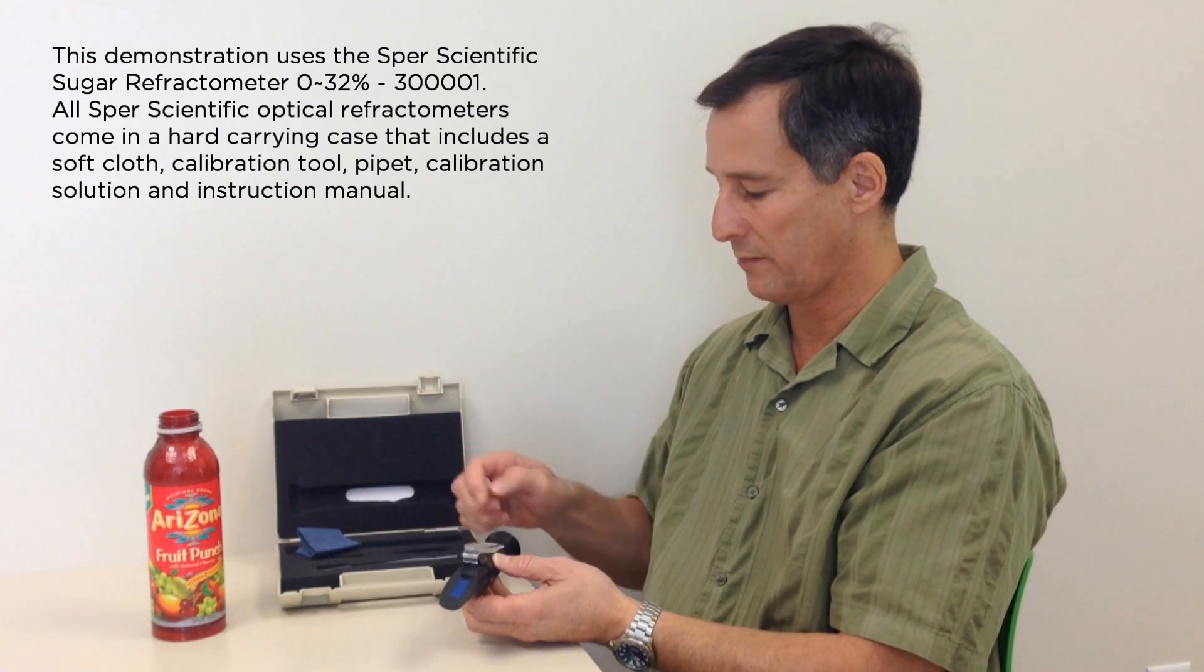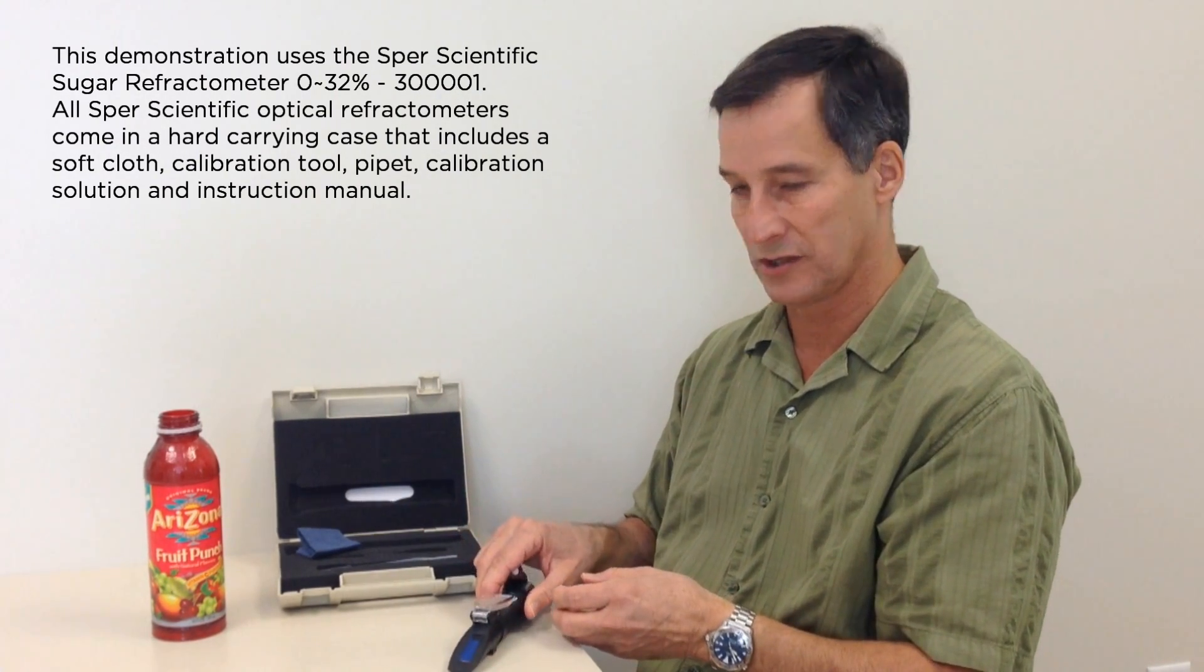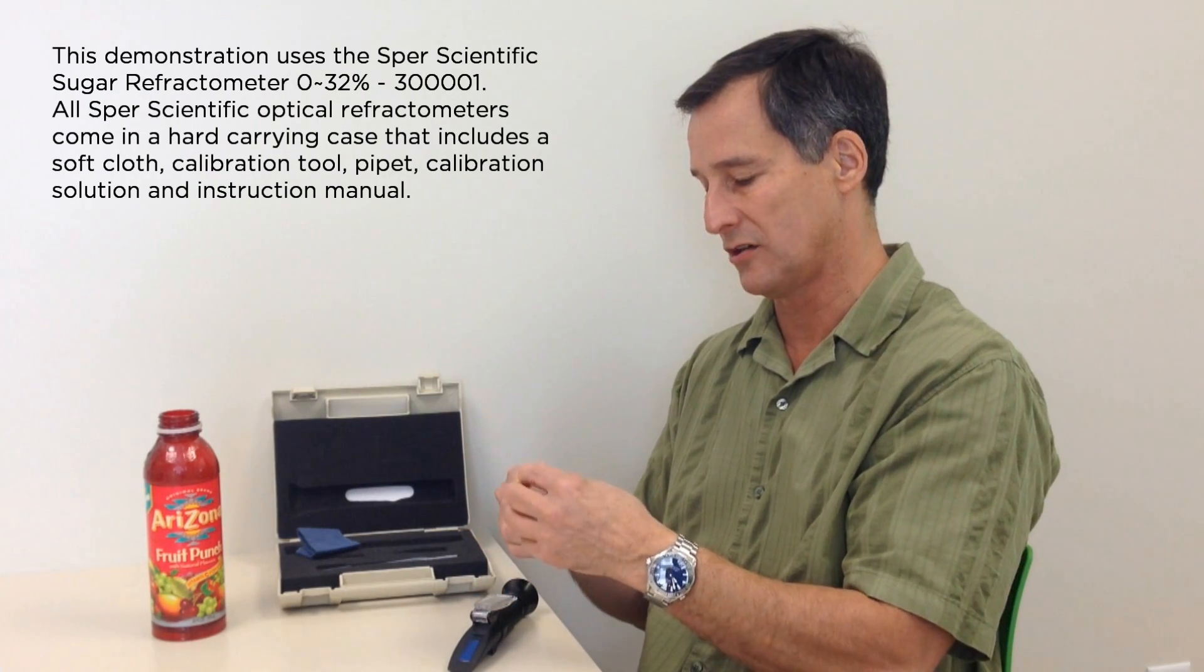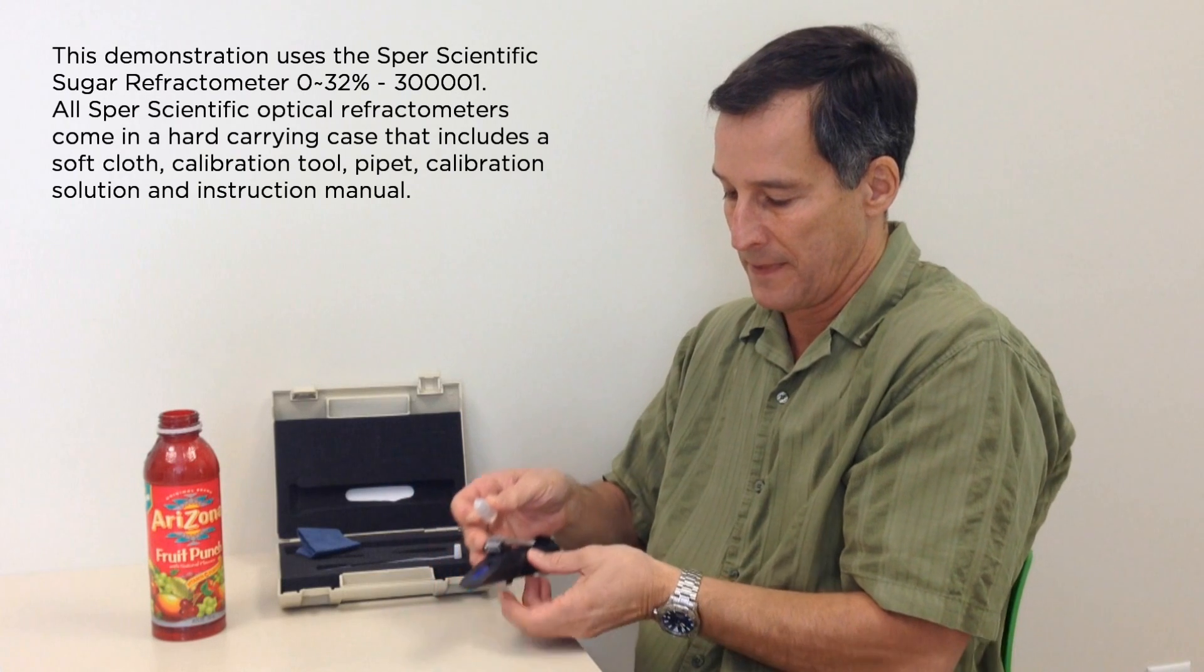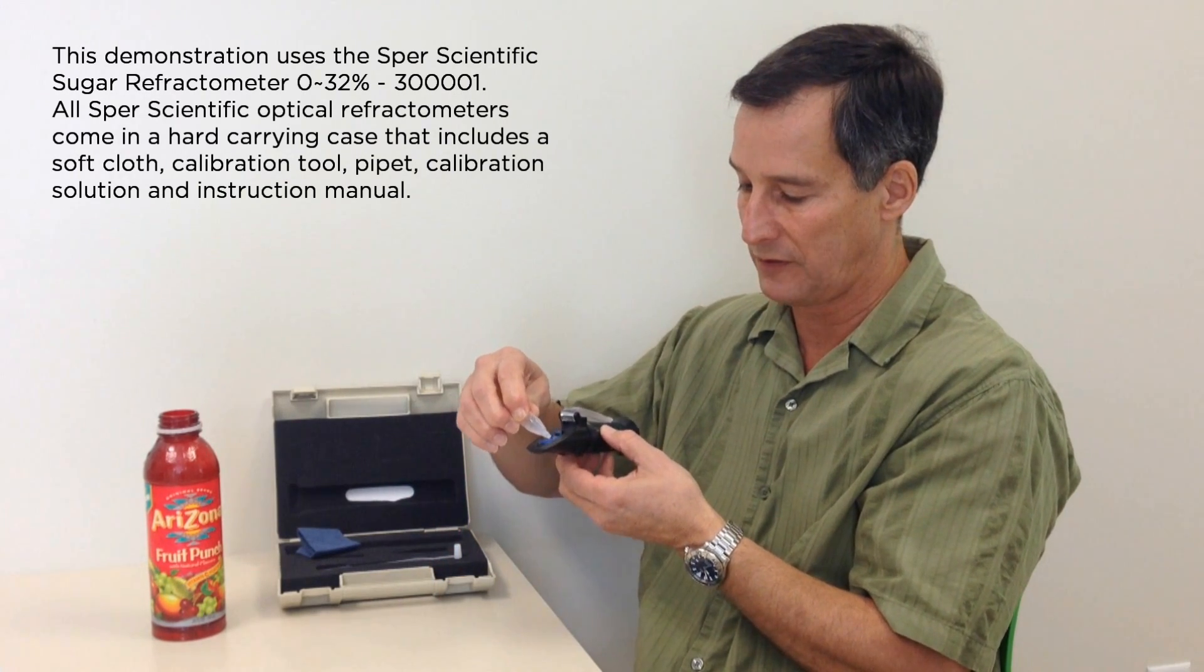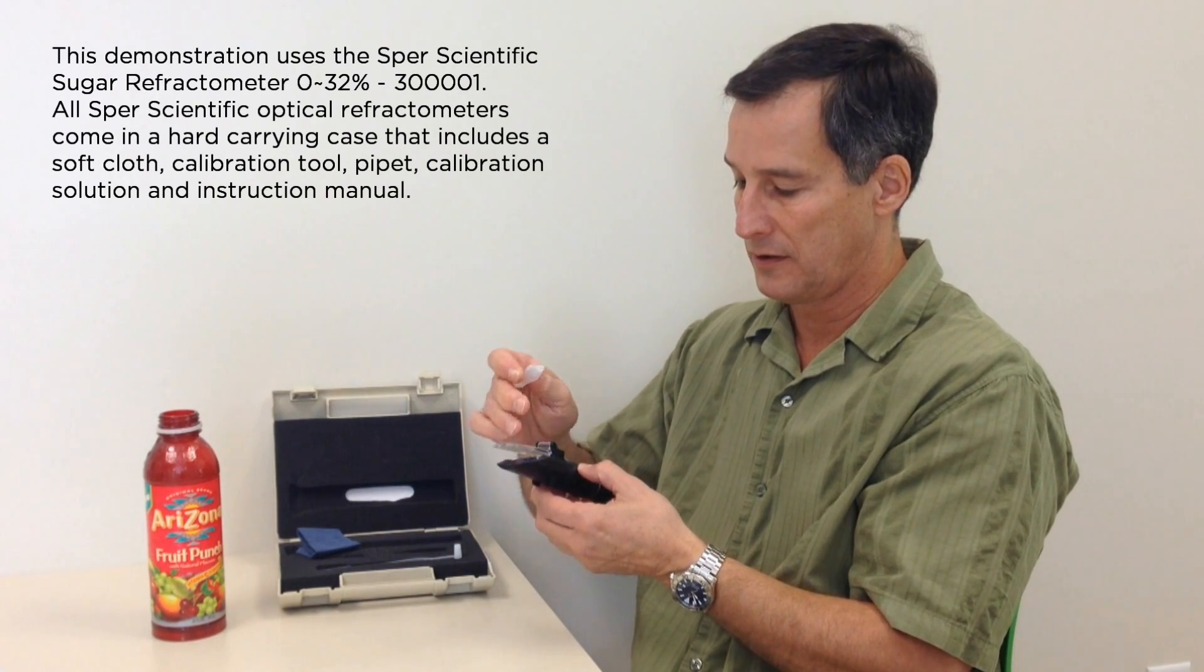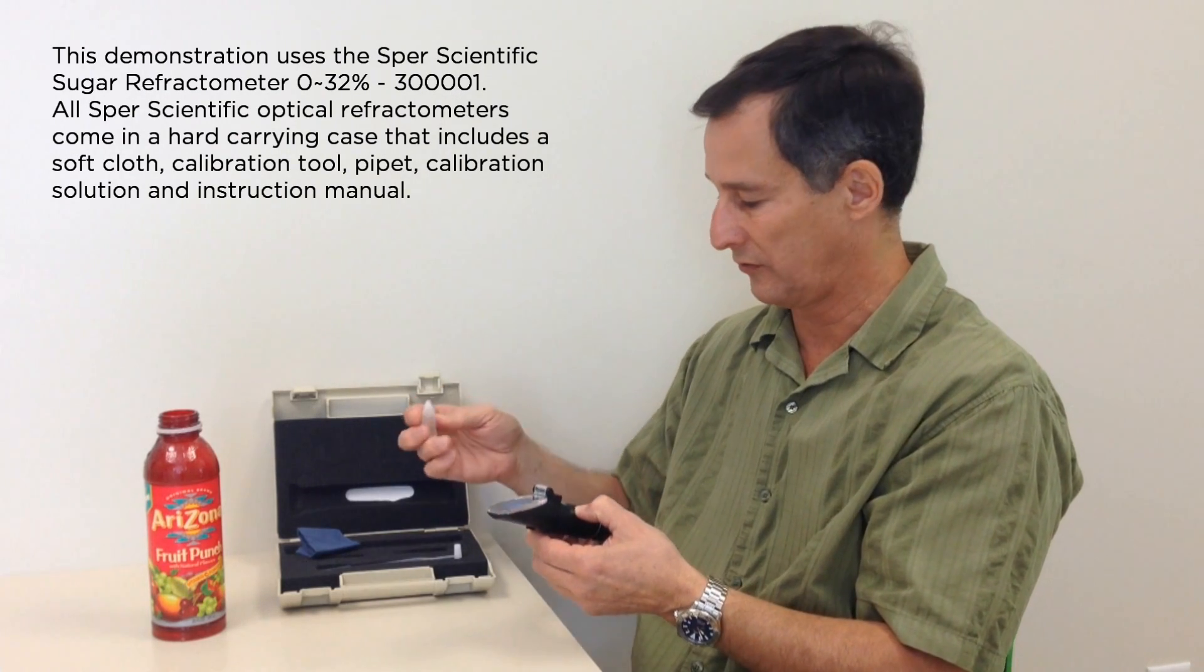We now want to put our calibration solution on the lens. In this case, our calibration solution is simply distilled water. We only need a few drops, just enough to cover the lens when the cover is closed.